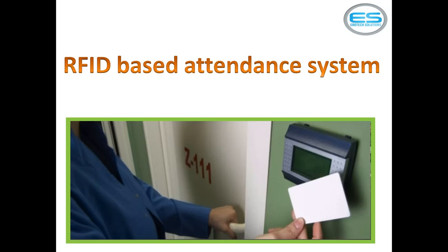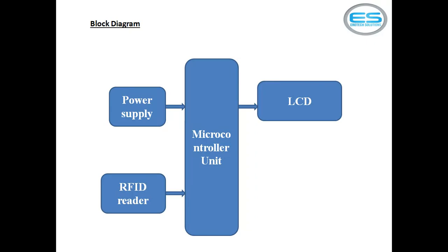Let's see the block diagram of this RFID-based attendance system application. I have given three individual sections: along with the microcontroller, there is the power supply block, the RFID reader module, and an LCD screen for text display.